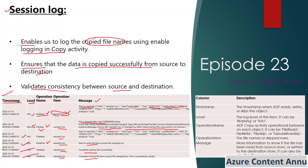The file that gets generated has a static schema, meaning we cannot change any of the columns — we cannot add or delete any column from this output file generated by session logging. The schema has these fixed columns: timestamp, logging label, operation name, operation item, and message. We have no control over this schema.